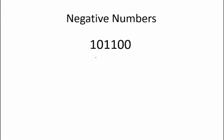What is the value of 101100? We apply the same logic as before. Now we have a 1 in bit positions 2, 3, and 5. That means that this number is equal to negative 2 to the 5th plus 2 cubed plus 2 squared, which equals negative 32 plus 8 plus 4, which equals negative 20.